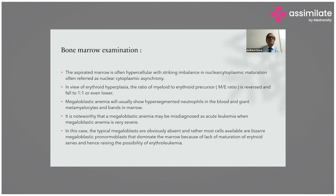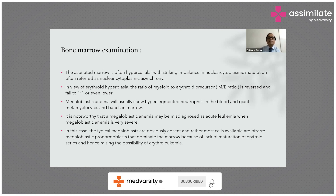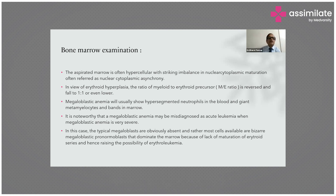Bone marrow examination: the aspirated marrow is often hypercellular with a striking imbalance in nuclear-cytoplasmic ratio, often referred to as nuclear-cytoplasmic asynchrony. In view of erythroid hyperplasia, the myeloid-to-erythroid ratio is reversed — 1:1 or even lower. Megaloblastic anemia will usually show hypersegmented neutrophils in blood and giant metamyelocytes and bands in the marrow.